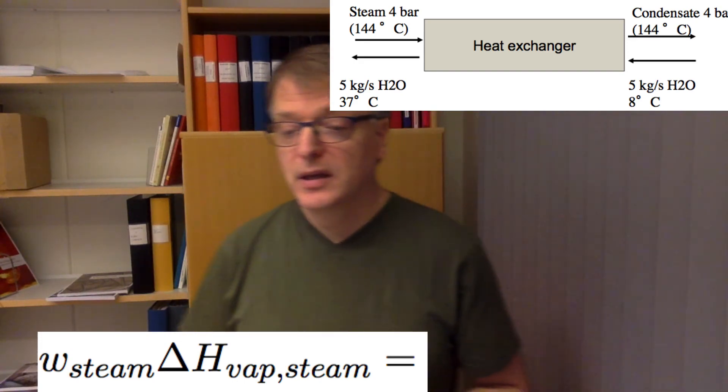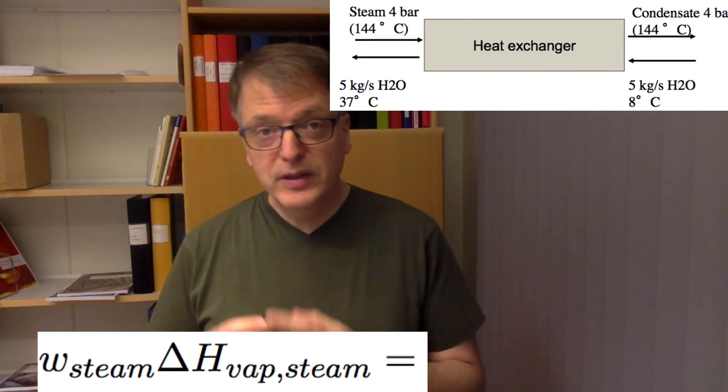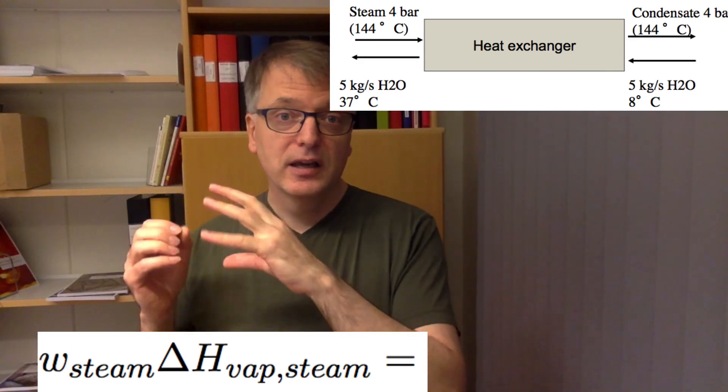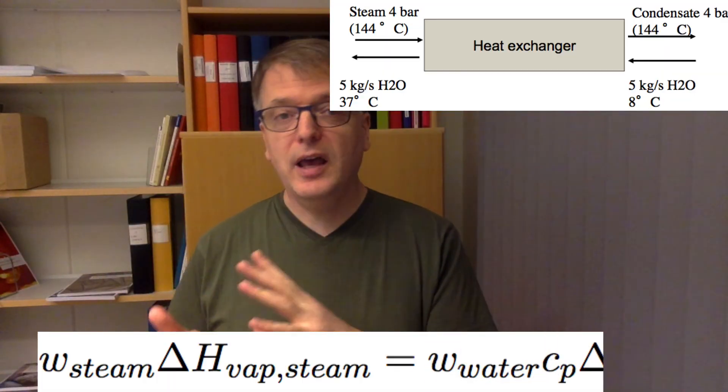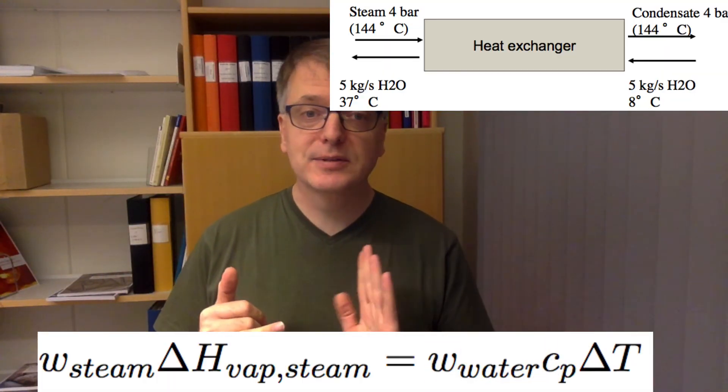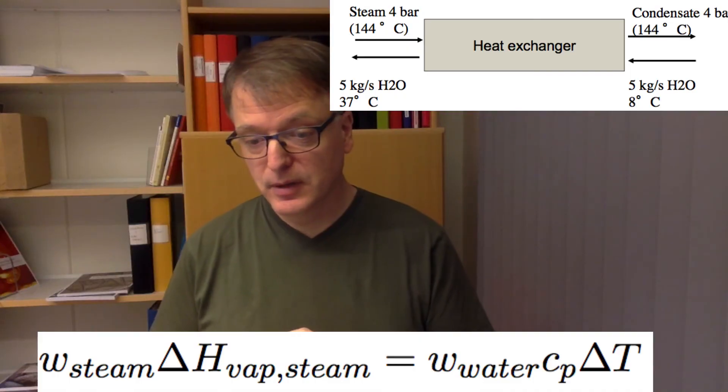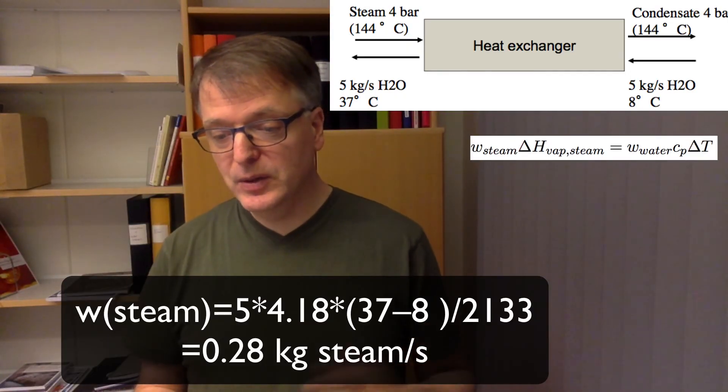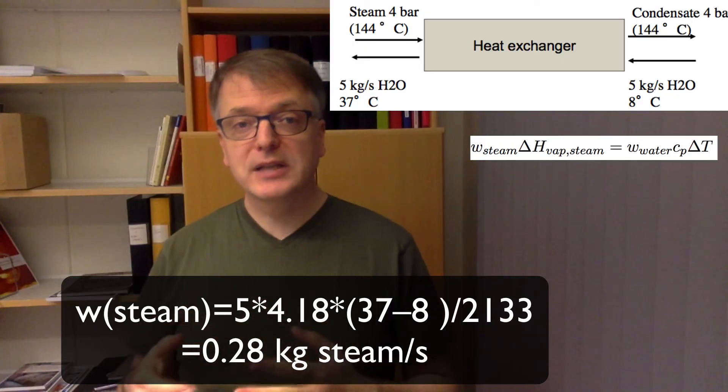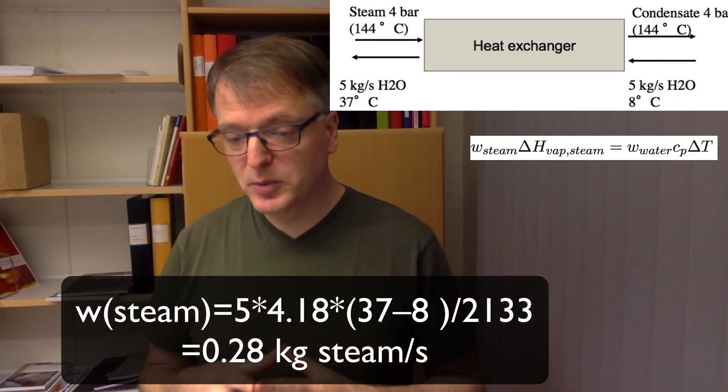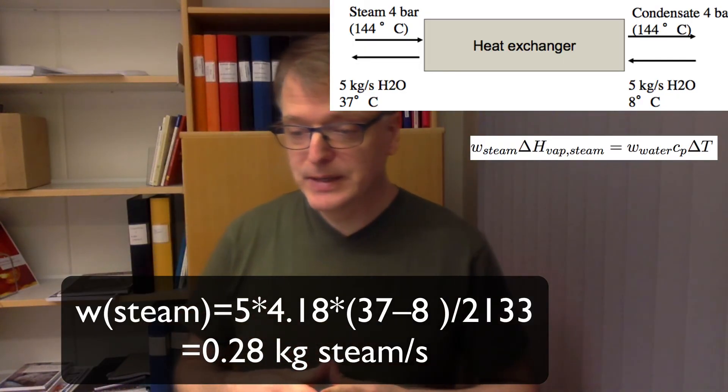So steam at 4 bar, we can look up in the handbook that has a condensation temperature at 144 degrees celsius, and the water should come from 8 degrees to 37 degrees. So we make an energy balance and say that the mass flux of steam times the evaporation enthalpy of the steam, that is the energy that is released when the steam is condensed, that must be the same as the mass flow of water times the heat capacity of water times the temperature change. And we quickly get, if you put in all the values, that the mass flux of the steam needs to be 0.28 kilogram per second.